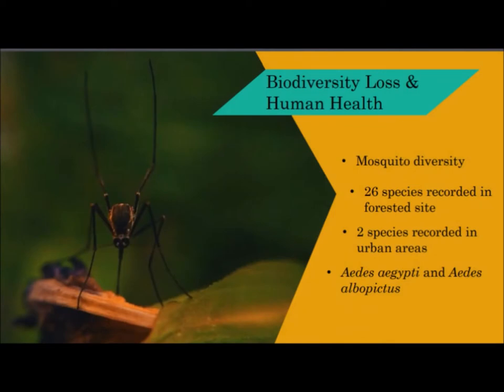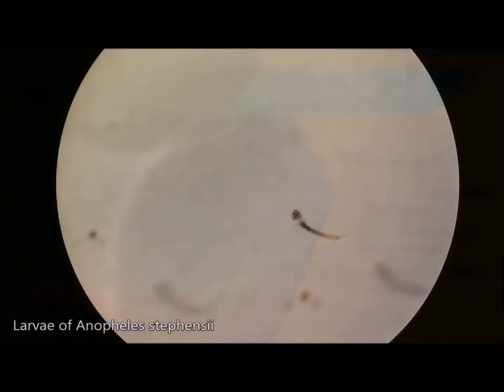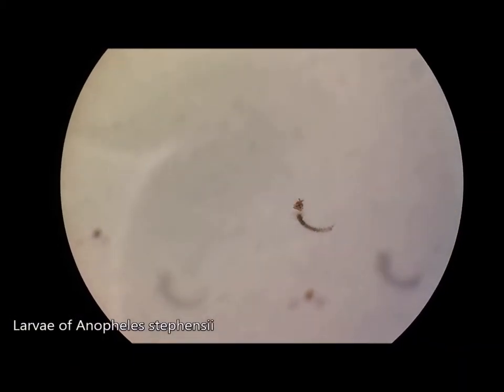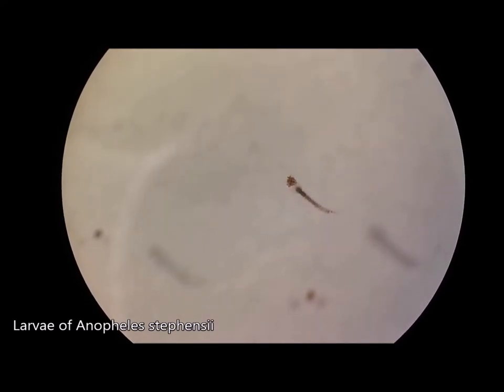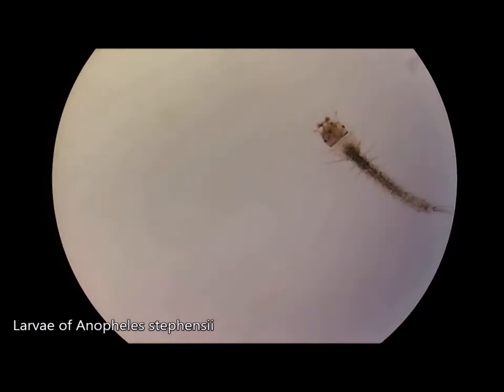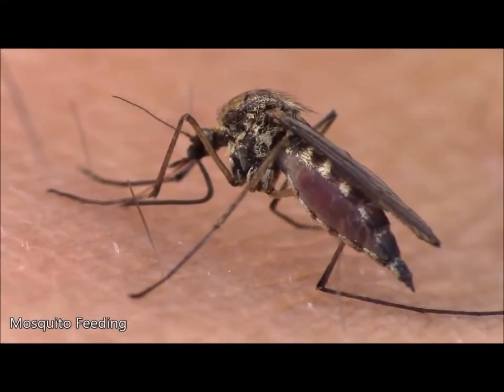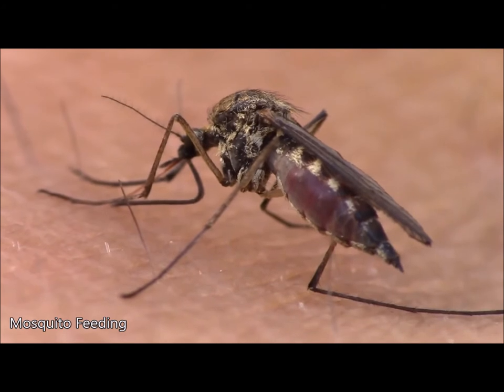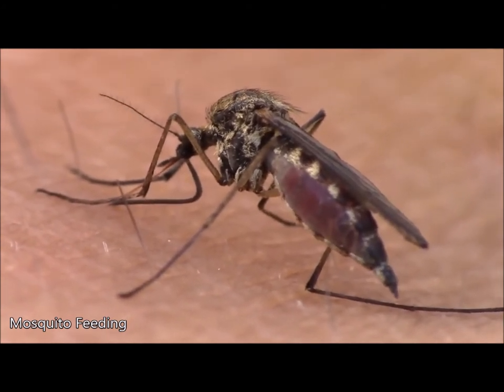Just like other animals, some insects have thrived in the urban environment where others have failed. Over the past couple of years, the Terrestrial Ecology Lab at Monash University Malaysia has conducted several studies on urban biodiversity. One of these included surveys on the diversity of mosquito species in urban and forested areas. Over 26 species of mosquitoes were recorded at one forested site, while in contrast, only two were recorded in urban areas: Aedes aegypti and Aedes albopictus, known vectors of dengue fever.